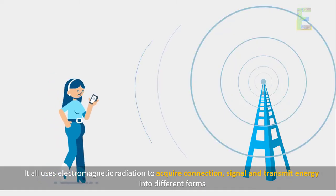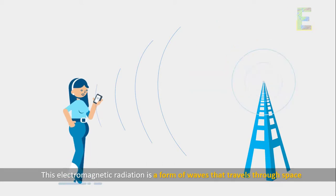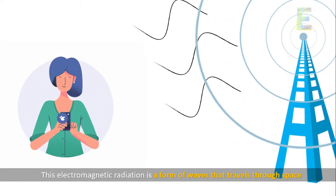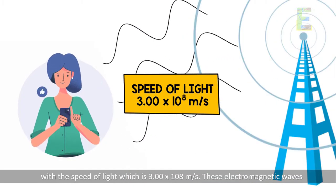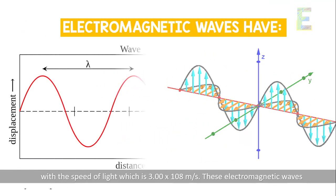This electromagnetic radiation is a form of waves that travels through space with a speed of light, which is 3×10⁸ meters per second. These electromagnetic waves are classified according to its wavelengths, frequencies, and energies.